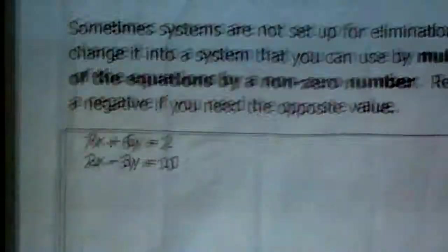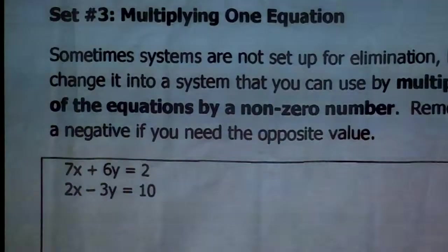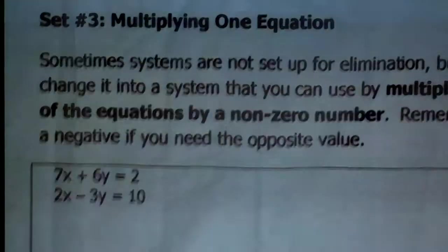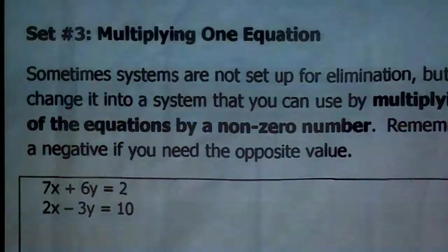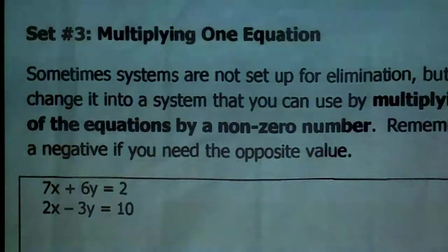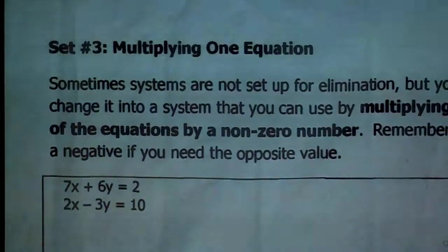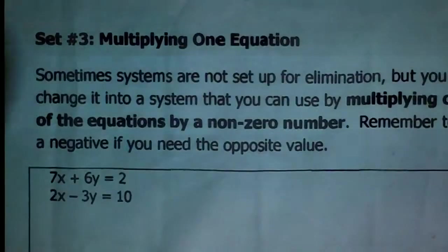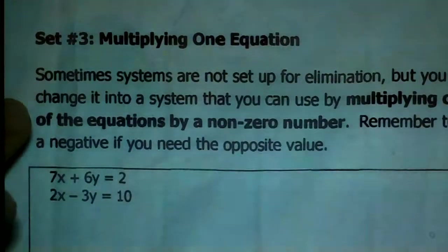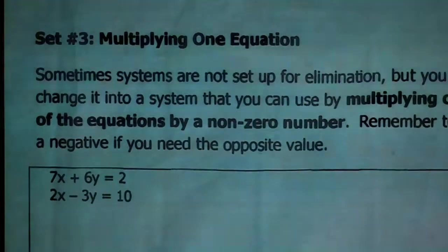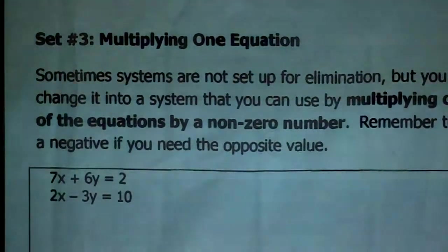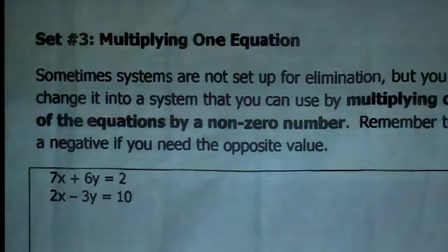Take a look at set number 3. Sometimes a system isn't set up for elimination — you don't have opposite coefficients that match — but you can make it that way. You can change it into a workable system by multiplying one of the equations by a non-zero number. Remember to use a negative if you need to get an opposite value — multiplying by zero leaves nothing and you can't solve the system.